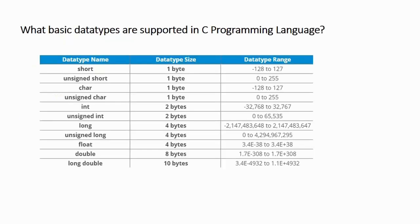Next question: what are the basic data types that are supported in the C programming language? We all know that in C there are different types of data types being supported. Let us look at some of the basic data types, their size and their range.